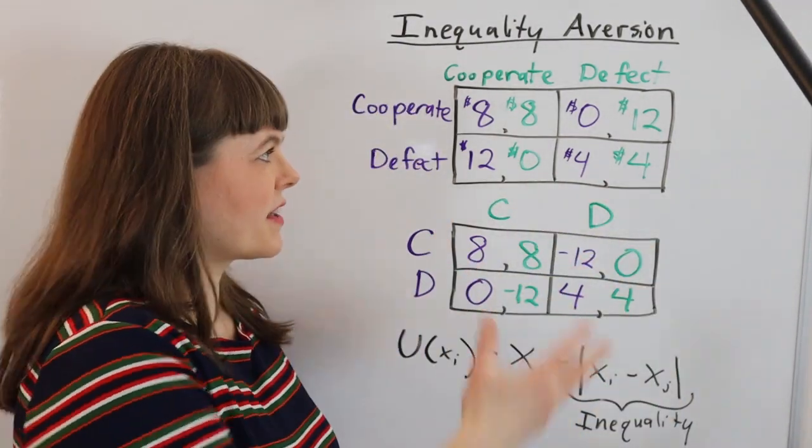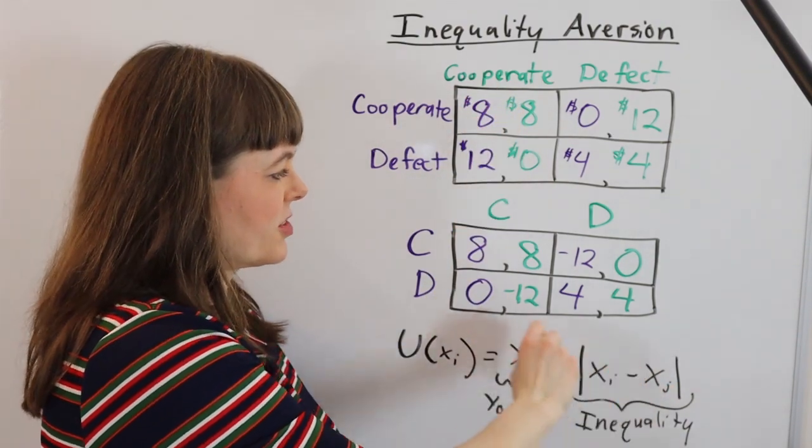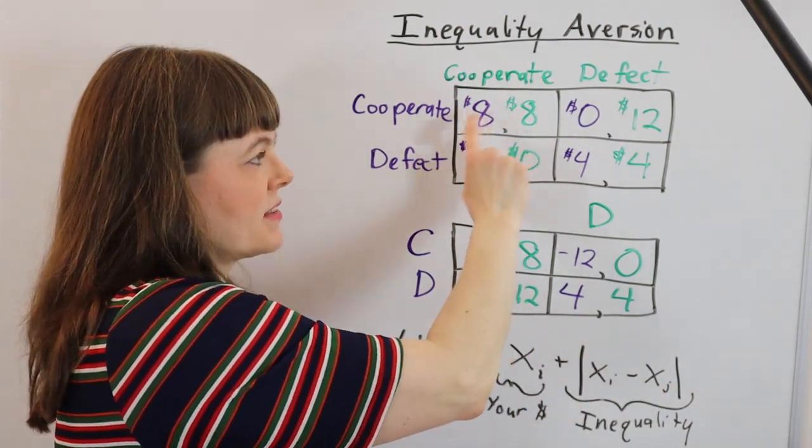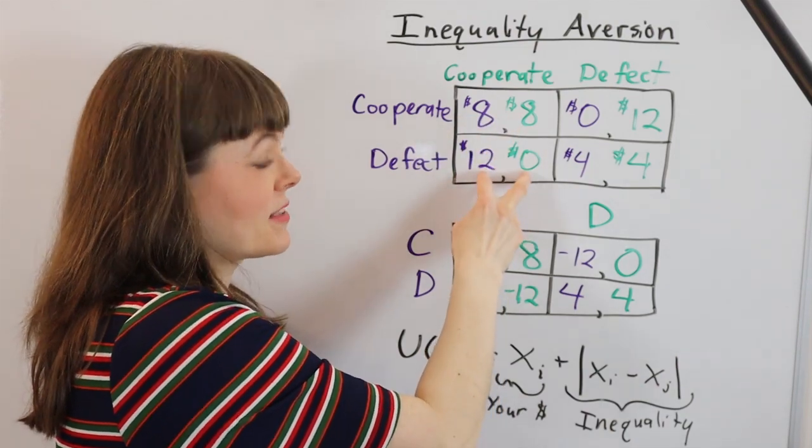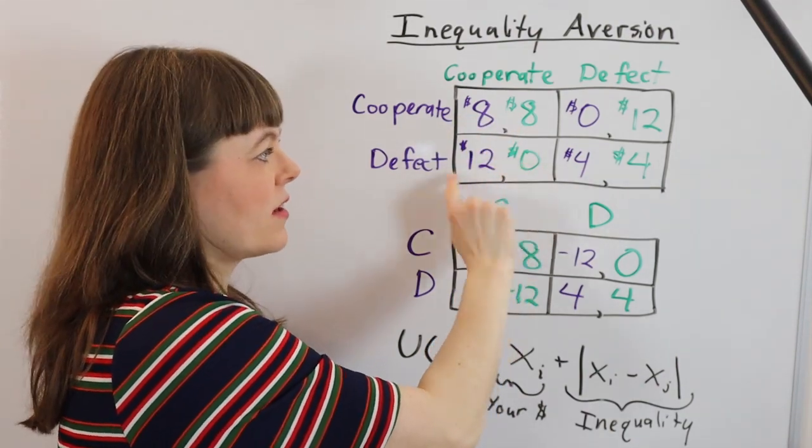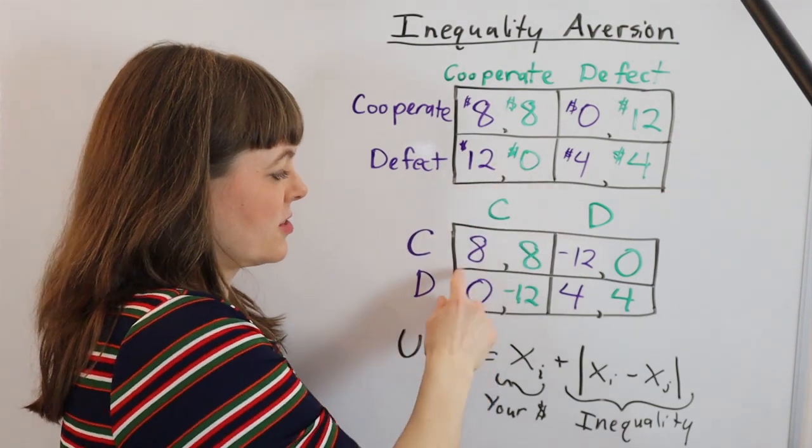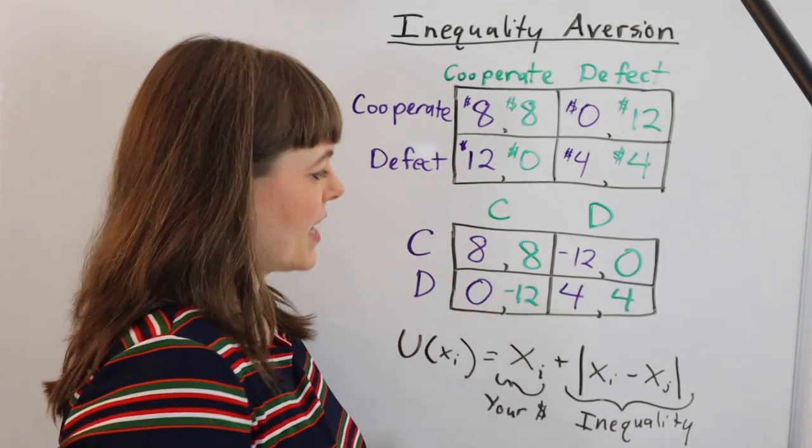I've just plugged the dollar amounts into this function so that up here you get eight minus zero because there's no inequality here. You get $12 minus 12 because the inequality is 12 units, so this turns into zero. And I did that with the rest of the table.